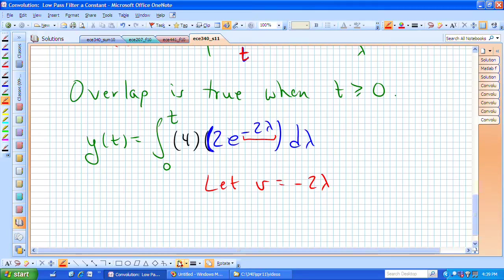v equals minus 2 lambda. That now allows me to say that dv is minus 2 d lambda, and I now need to find a minus 2 d lambda in there.